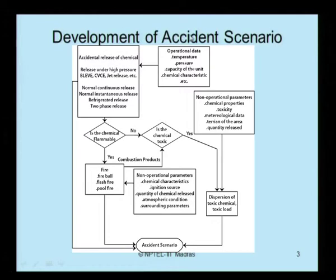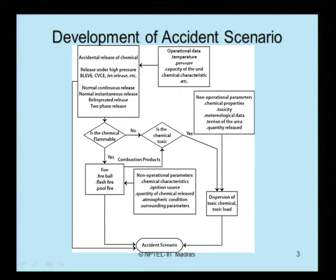Looking at the development of accident scenario: the accidental release of chemical under high pressure — for example, BLEVE, CVCE, jet release, etc. — are possible. There can be a normal continuous release, a normal instantaneous release, a refrigerated release, or a two-phase release. These all depend on operational data like temperature, pressure, capacity of the unit, and chemical characteristics.